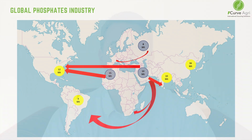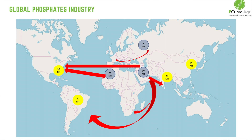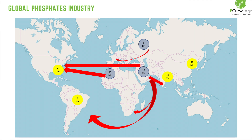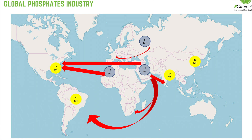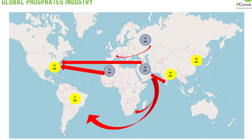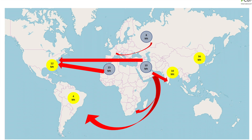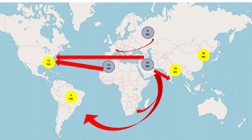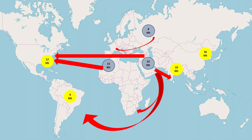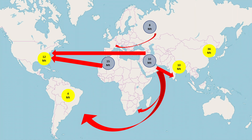We'll now look at phosphate production and some of the trade flows. On this global map, I've highlighted the phosphate capacity across the major regions. The yellow circles show countries that are net importers of phosphates — despite having some domestic phosphate capacity, they still do not meet their local demand. The blue circles represent those producers who are exporters, i.e. they produce a surplus of phosphates above their local demand.